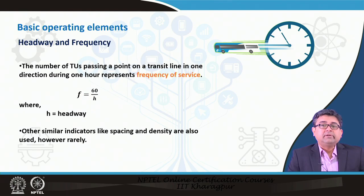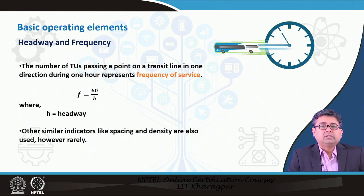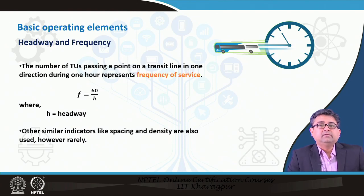Frequency and headway are the inverse of each other: F equals 60 divided by h, where h is the headway in minutes. Sometimes alternative indicators like spacing or density are used, but frequency and headway are the most common. We have to remember the subtle difference between frequency and headway.